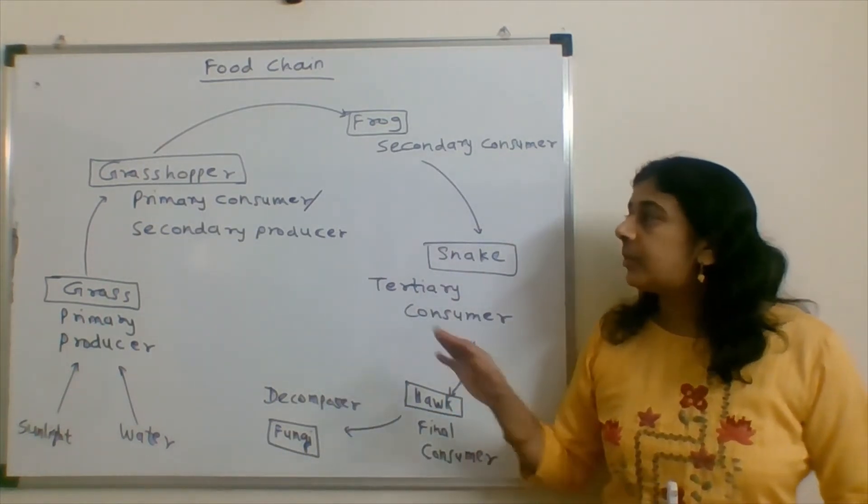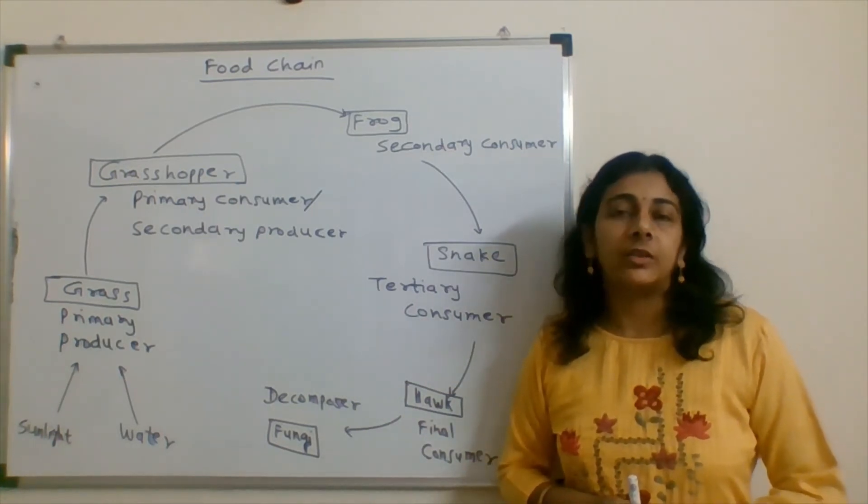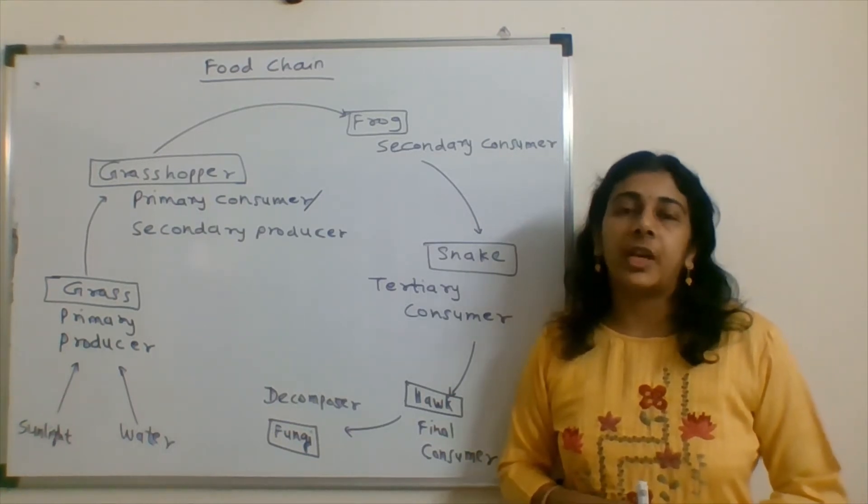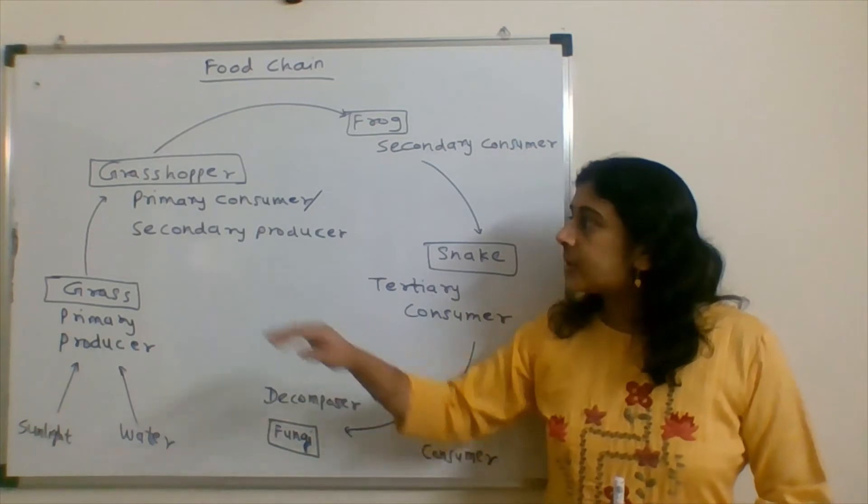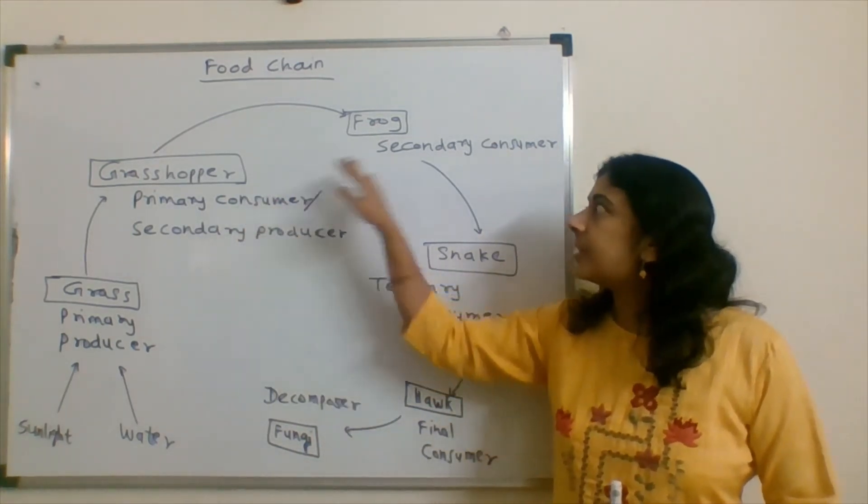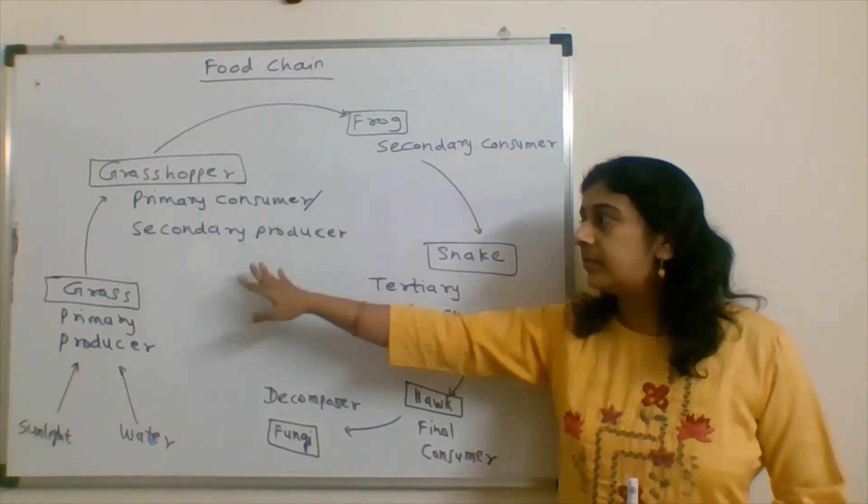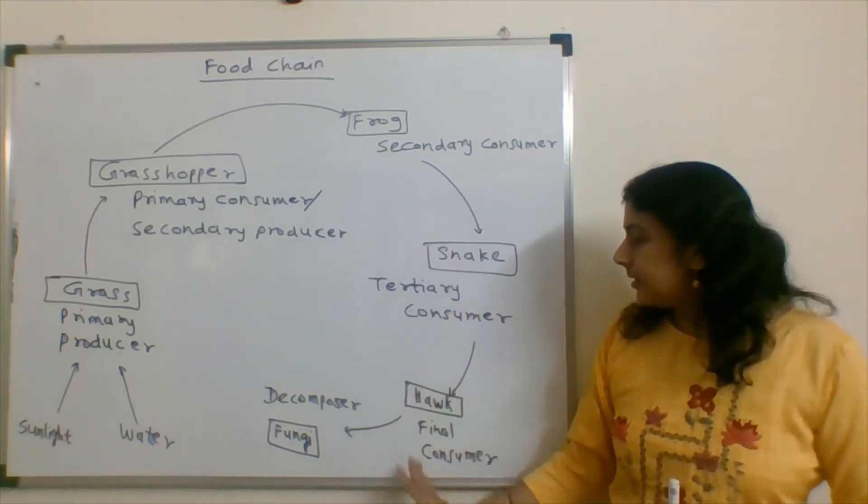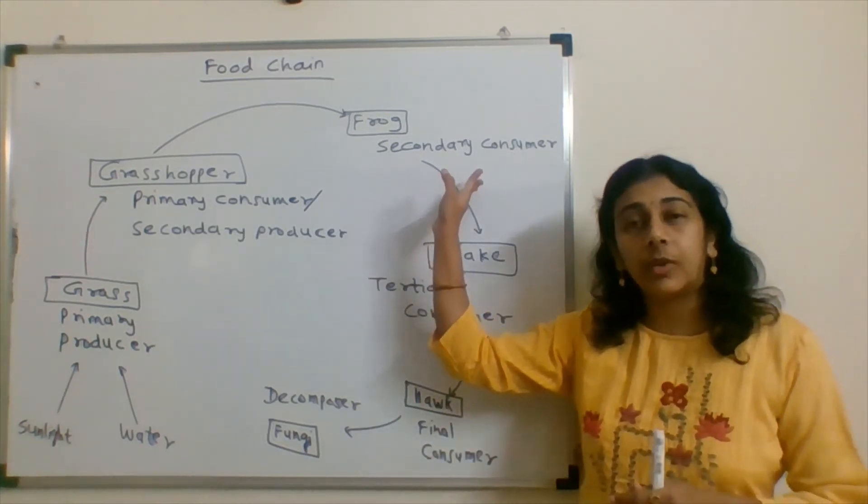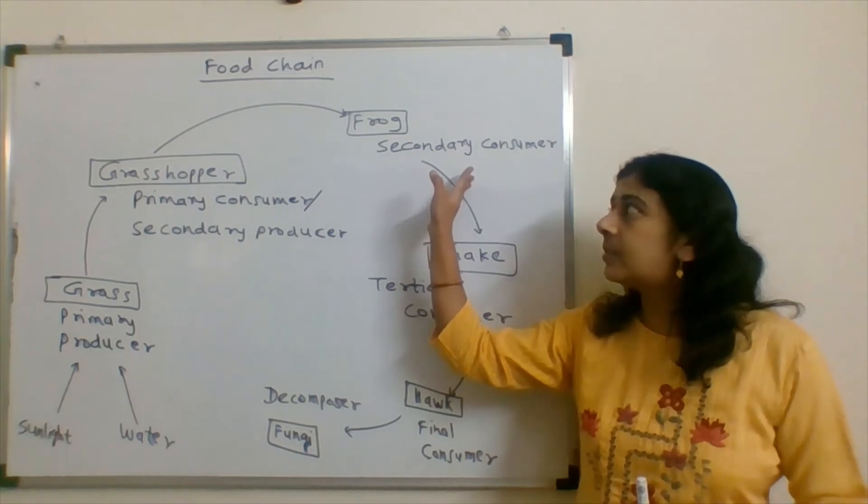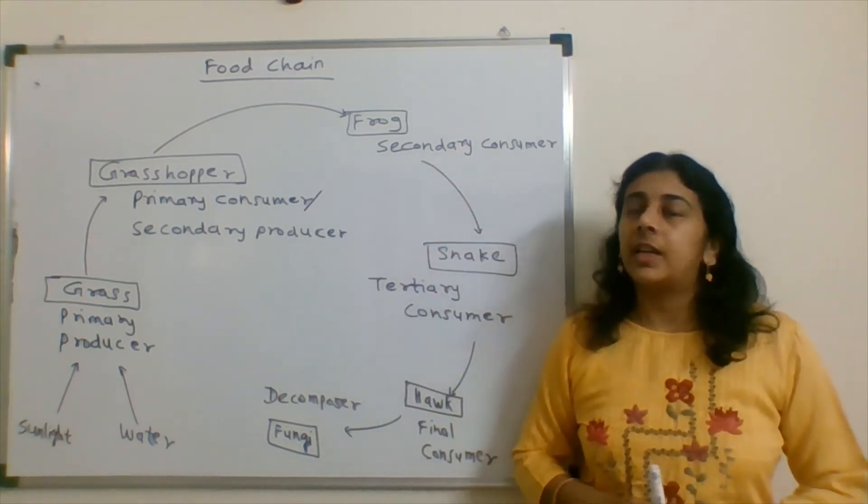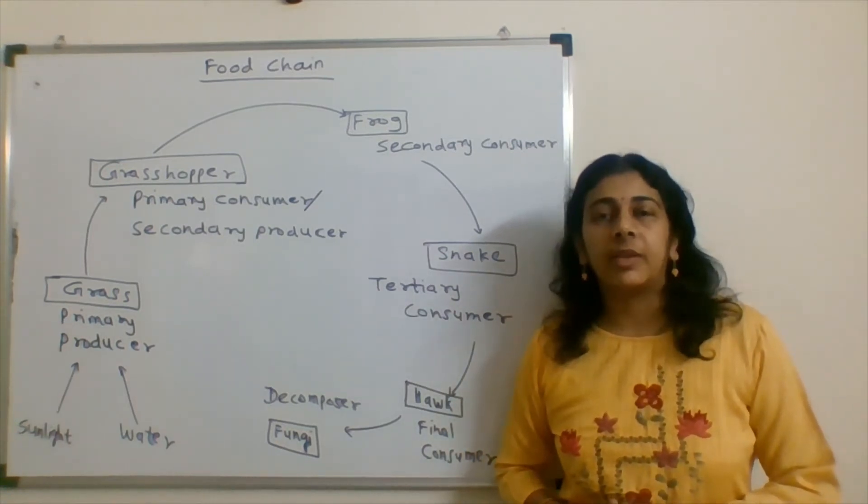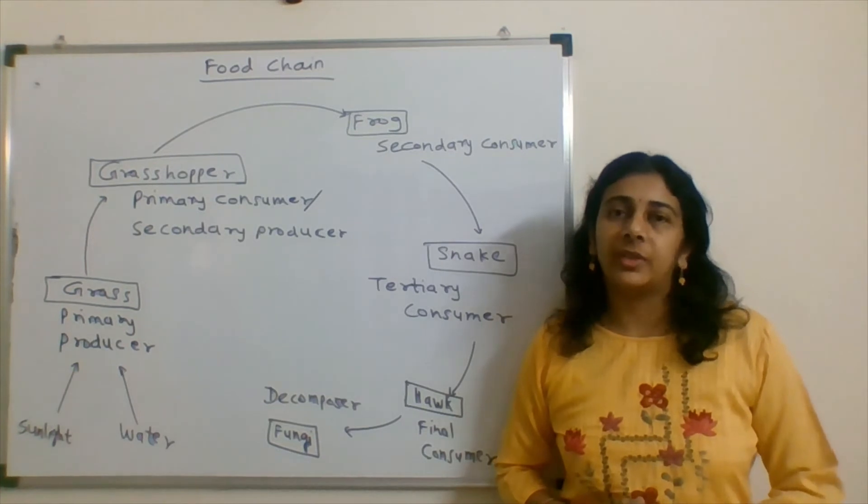So here we are asked about biomagnification and which stage it occurs. In the question terms we have seen primary consumer, secondary consumer, primary producer, and secondary producer. They have asked which is the final consumer, so they have considered biomagnification. We will come to the answer.